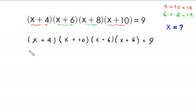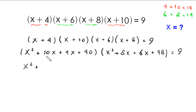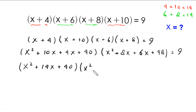Now we expand these two expressions. This becomes (x²+10x+4x+40) times (x²+8x+6x+48). Simplifying: x²+14x+40 times x²+14x+48 is equal to 9.